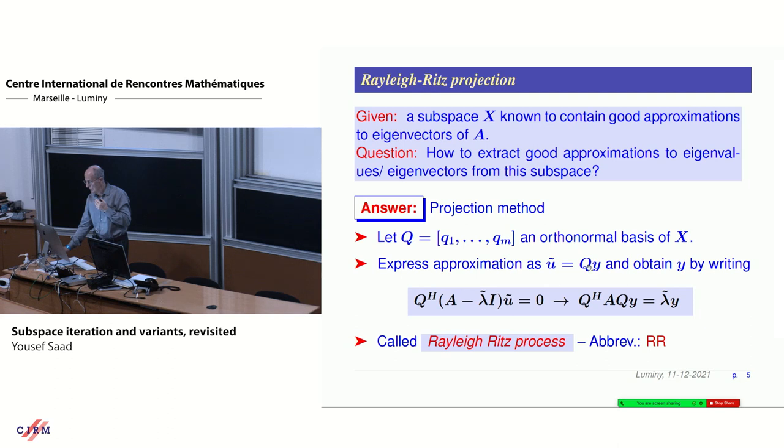You express the approximation u tilde as q times y. This is your basis and y is the coefficients of the vector u tilde in the basis. Then you express the fact that the residual is orthogonal to the subspace, which you write by saying this is orthogonal to qh. Then you get this small eigenvalue problem to solve.